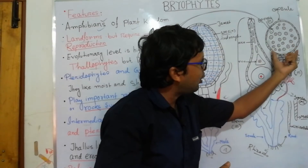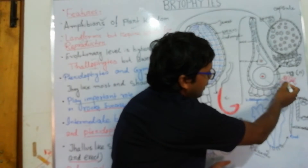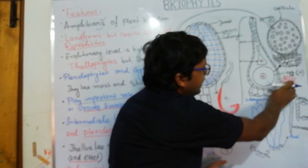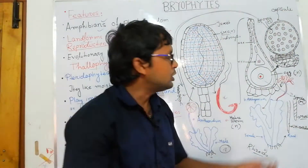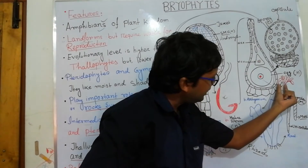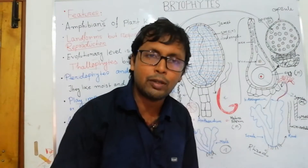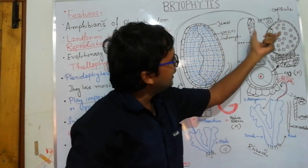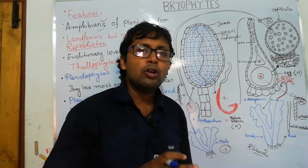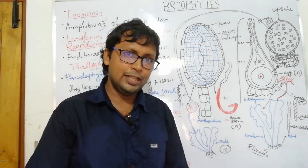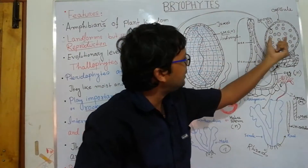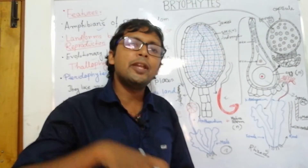The sporophytic body is not an independent plant — it develops on the female gametophytic body, specifically the archegonium. So the sporophytic body is dependent on the gametophyte. This sporophytic body then undergoes meiosis to produce multiple spores — meiotic spores — which are haploid.